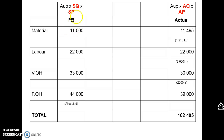Now we can make meaningful comparisons. Material should have cost 11,000 Rand but actually cost 11,495 Rand — we overspent. Labor should have cost 22,000 Rand and did cost 22,000 Rand — that looks fine. Variable overheads should have cost 53,000 Rand to produce 1100 units but only cost 50,000 Rand — that's less than expected. We'll leave fixed costs aside for now.